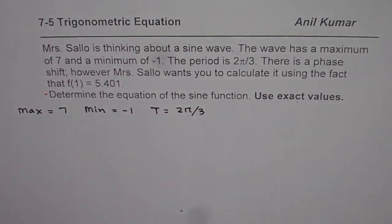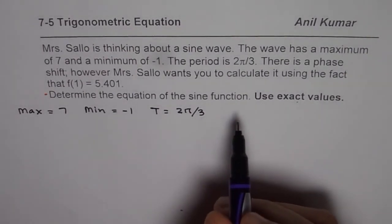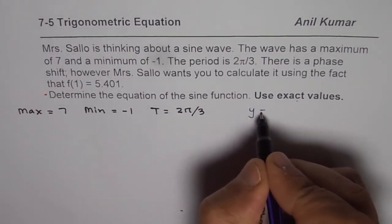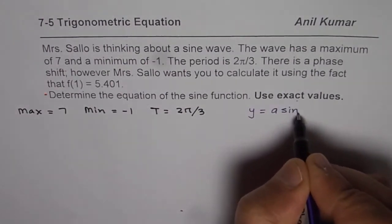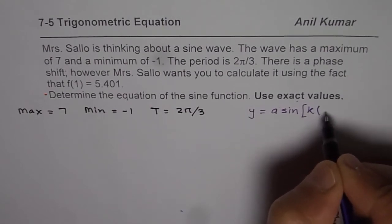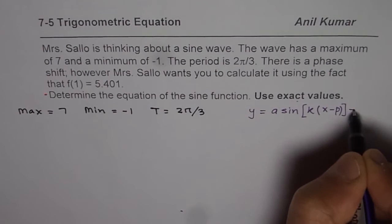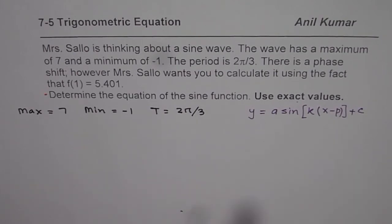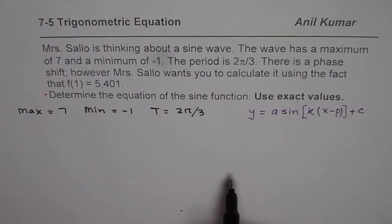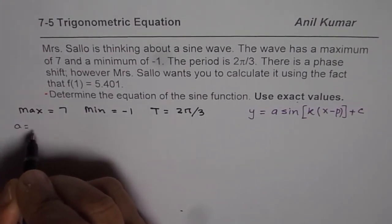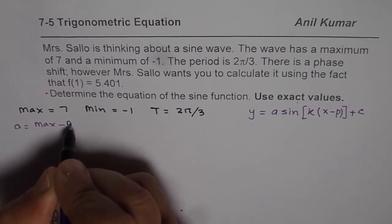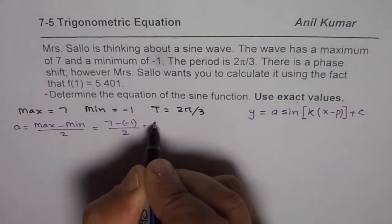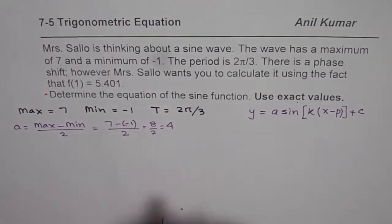These values give us the required parameters for our equation. We are trying to write a sine function, so let me say that the sine function will be of the form y = a sin k(x - p) + c. From here we can find a equals maximum minus minimum, that is the amplitude divided by 2, which is 7 minus (-1) divided by 2, or 8 divided by 2 which is 4.